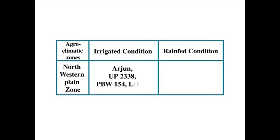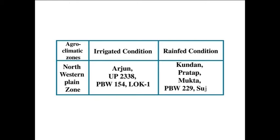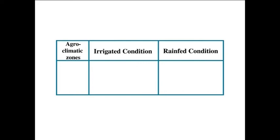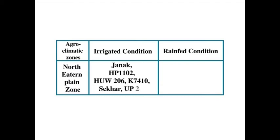Under rain-fed conditions for these zones, the varieties recommended are Kundan, Pratap, Mukta, PBW-229, and Sujata. For north-eastern plain zones under irrigated conditions, the recommended varieties are JANAK, JP-1102, HUW-206, KS-7410, SHAKR, and UP-262. Under rain-fed conditions for north-eastern plain zones, the varieties recommended are SONALI, HUW-213, UP-115, K-9006, and HD-2386.